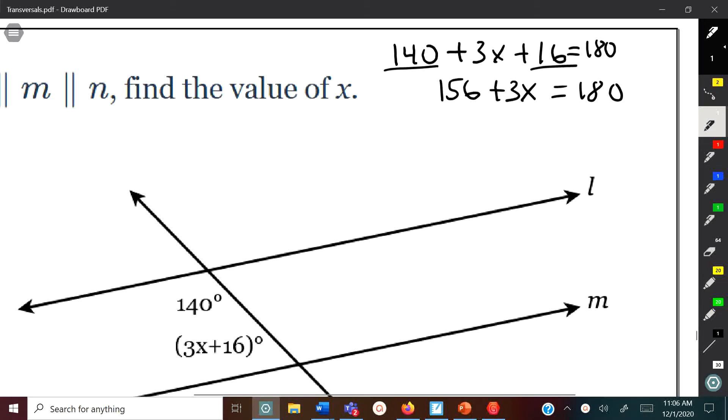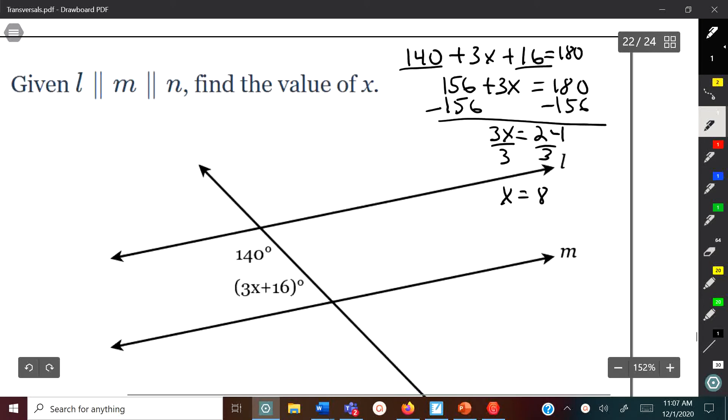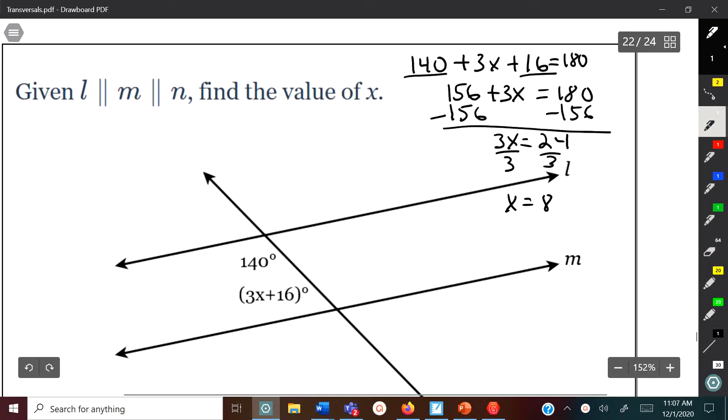Now we're going to isolate the variable by subtracting 156 on both sides. That's going to leave me with 3x equals 24. Then we're going to divide by 3, and x is equal to 8. That's it, that's how you find the value. The main thing is you gotta solve the equation, but you also gotta recognize is it going to be acute or obtuse, or one of each, or both the same.